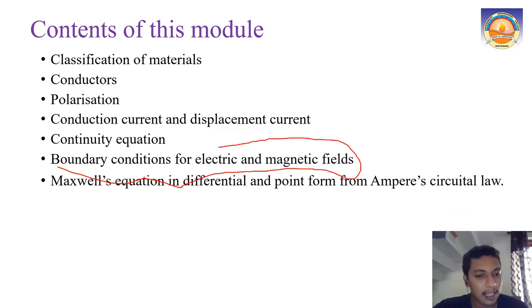The next part that we will be covering is Maxwell's equations in differential and point form from Ampere's circular law. The last part will include Faraday's law. From here we are going into electric and magnetic fields in time-varying aspect. We'll see how the electric and magnetic fields will vary when you have the time-varying nature of the field.